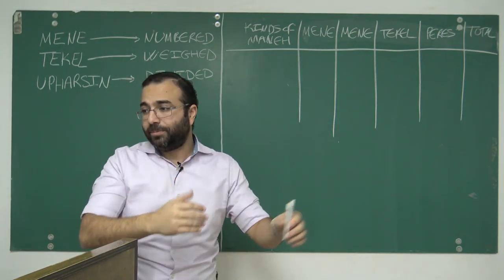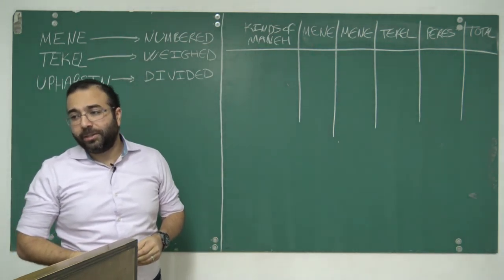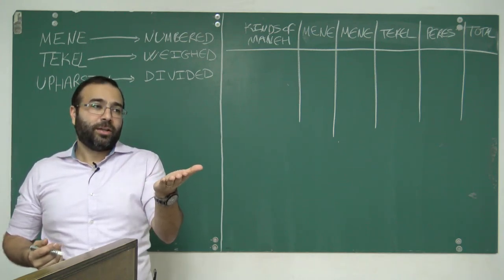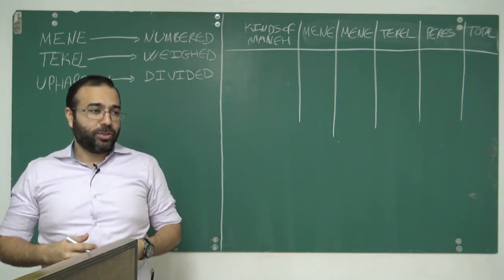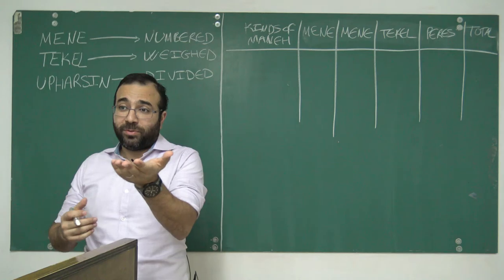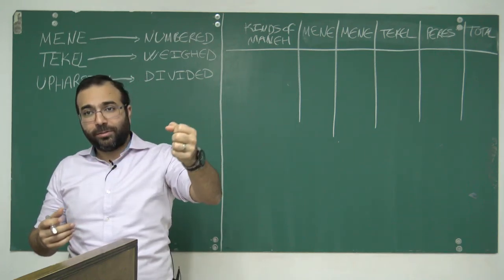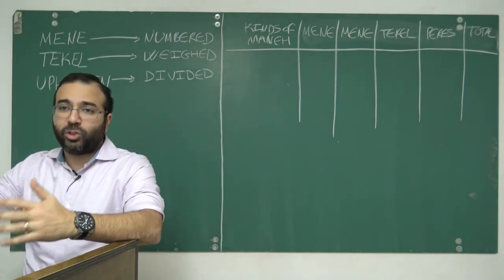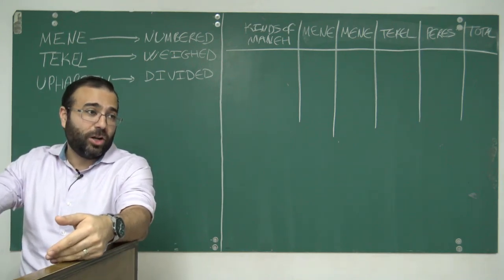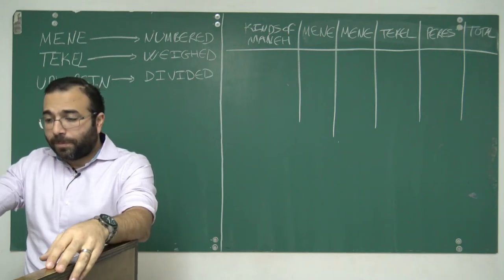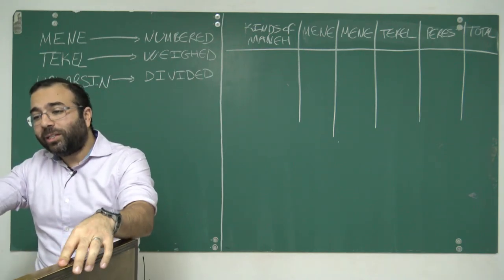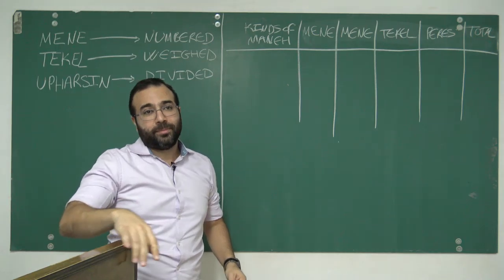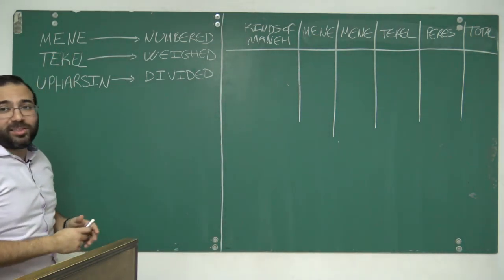Look in Ezekiel 45:12. There the prophet, who was a contemporary of Daniel, says the shekel shall be 20 gerahs. A gerah is a weight, literally means grain. Back then you weigh things, the price for something by weight, like a bag of grain.